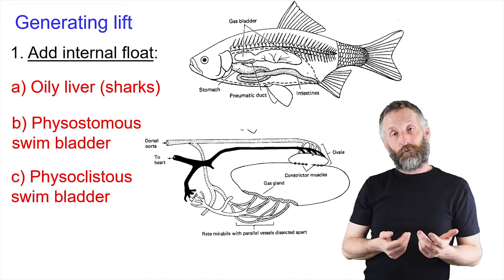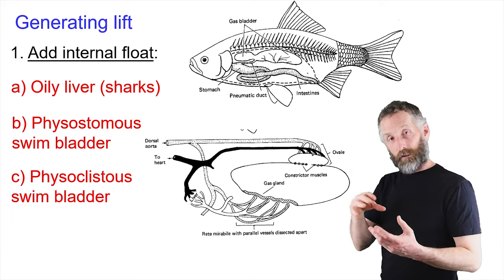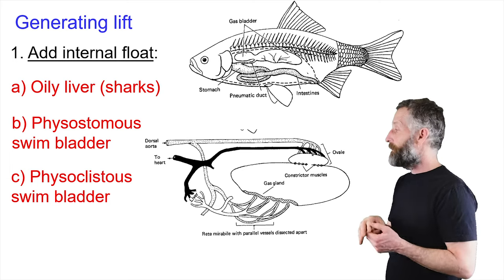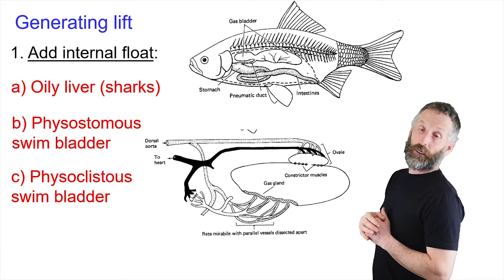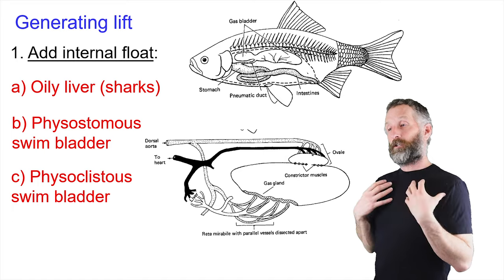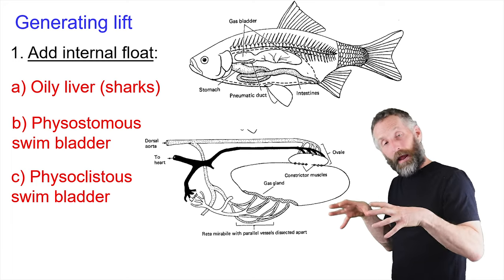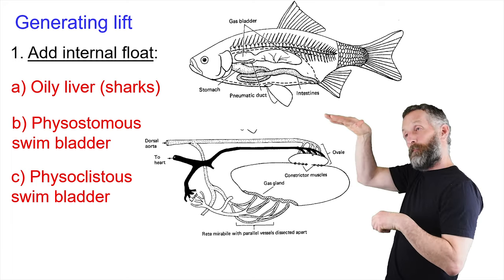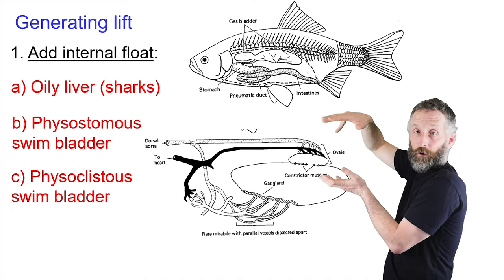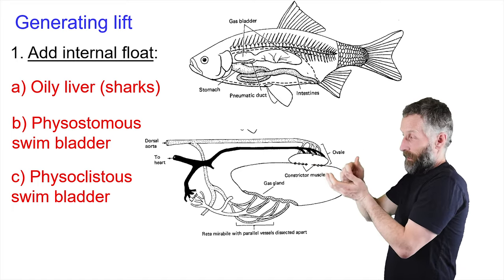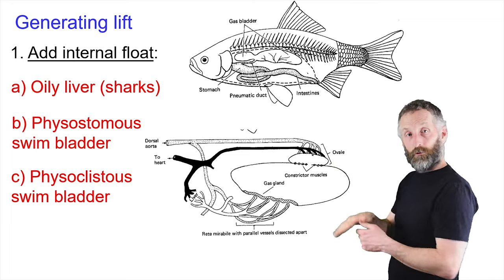One way to achieve this is through an internal float. There are three types: sharks tend to have oily livers, and since oil is lighter than water, that helps generate lift. Then there are two types of swim bladders in fish: physostomus and physoclistus. Both are like the buoyancy control device in scuba gear — you let air in if you go down so it expands and keeps you at that depth, but as you go up the air expands and you have to let some out to maintain neutral buoyancy.